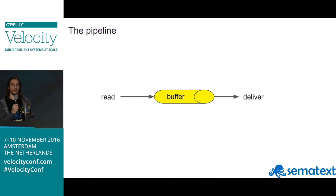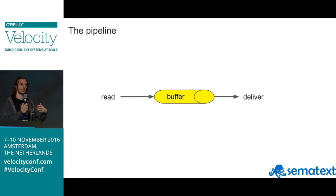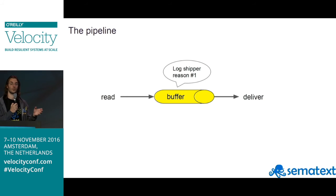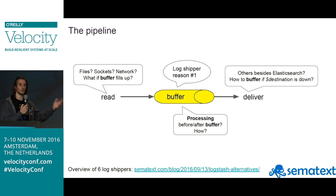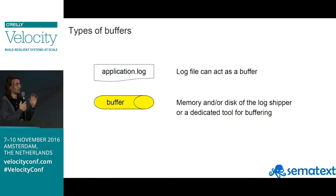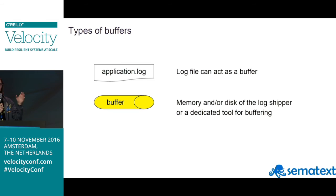The final part is the pipeline. The central piece is the buffer — you really need some buffer somewhere that enables batching messages and sending them in batches to Elasticsearch, and also absorbs back-pressure if Elasticsearch slows down or becomes unavailable. Buffering is the number one reason you'd want a dedicated log shipper rather than shipping directly from your application. A log file can also act as a buffer, but typically a buffer means a log shipper's buffer or dedicated software like Kafka or Redis.